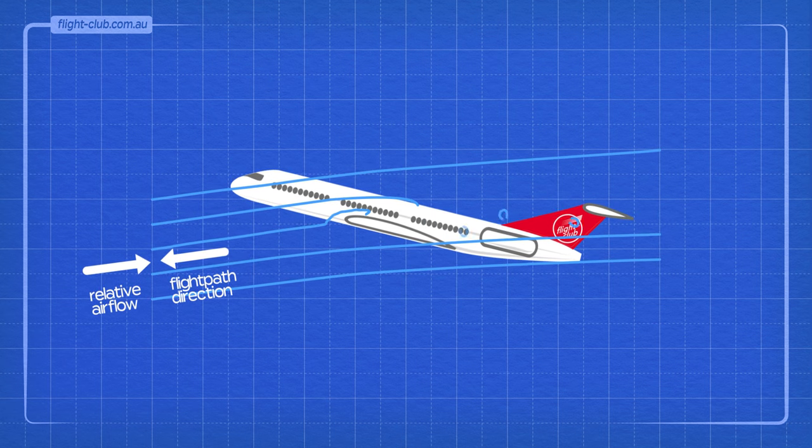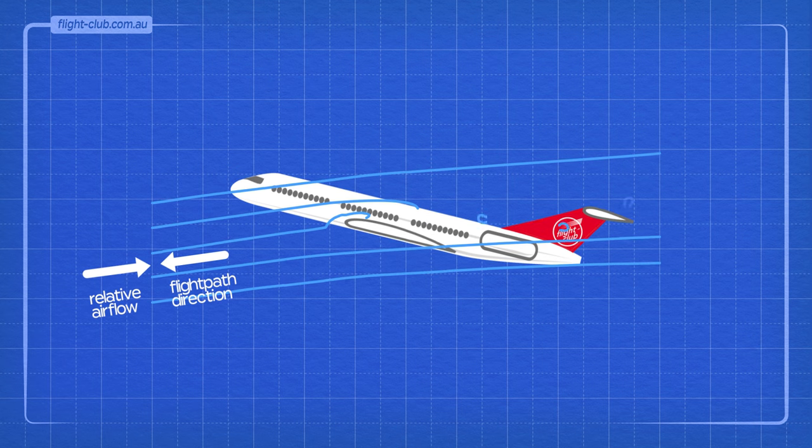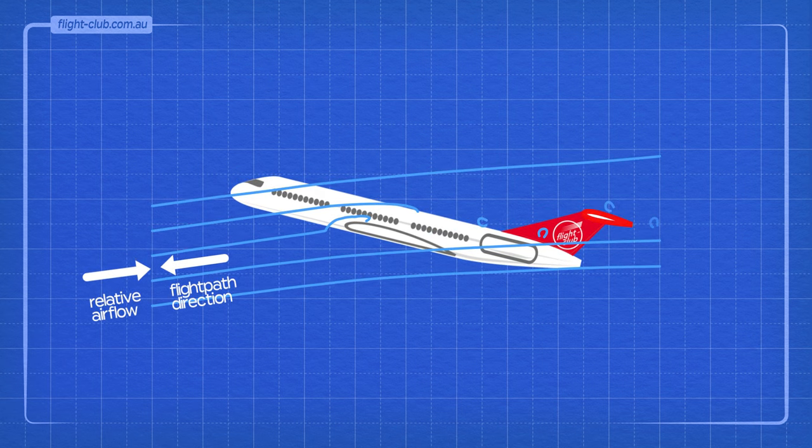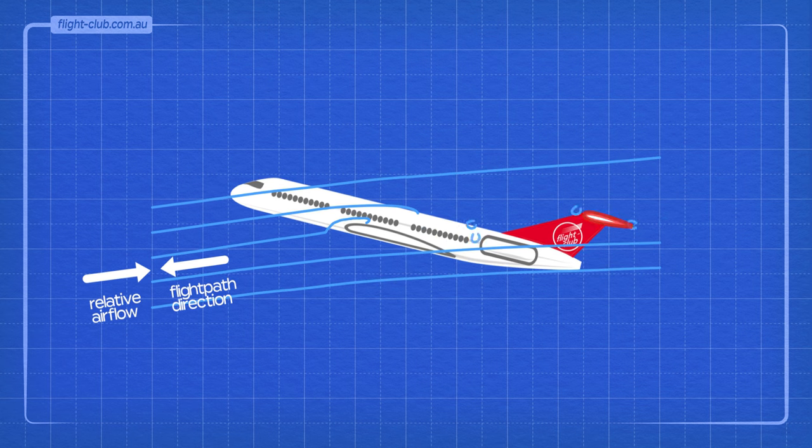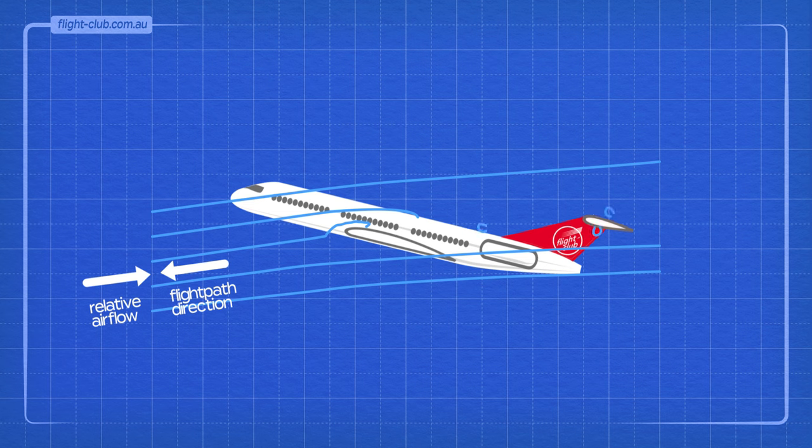The separated airflow from the stalled wings immerses the tailplane in the low energy turbulent airflow. The elevator effectiveness is reduced, hence the pilot is unable to recover from the stall.